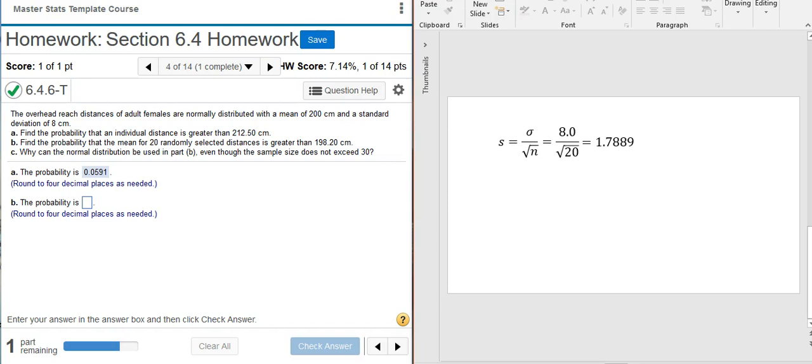I'm a little wary of putting any sort of rounded number into the calculator and then getting another number that I have to round out. It might be off just enough to where Pearson marks me wrong.